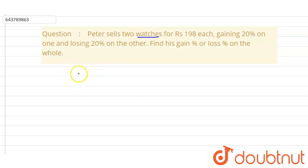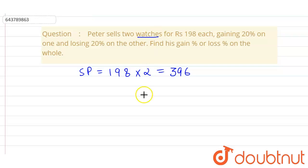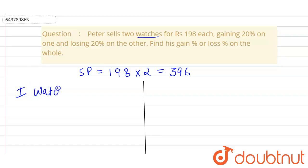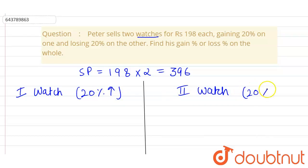There are two watches. Both have a selling price of rupees 198 each, so total selling price is 198 into 2, which equals 396 rupees. There is a 20% gain on the first watch and a 20% loss on the second watch.